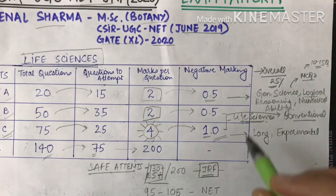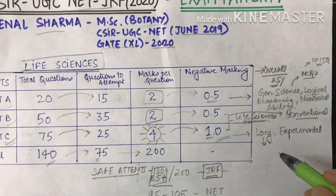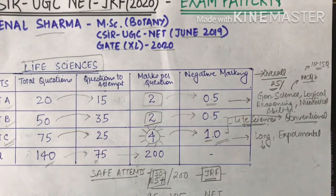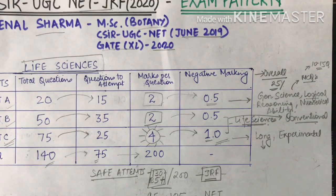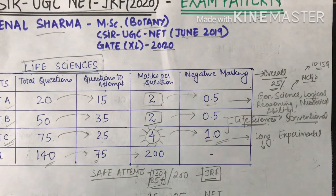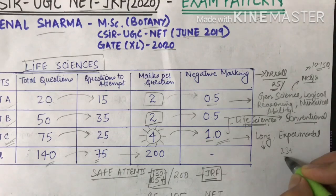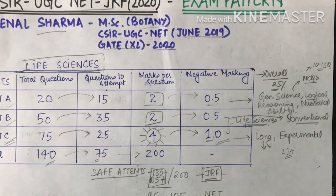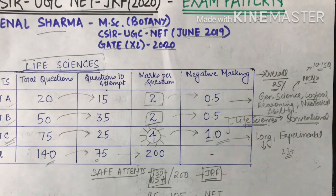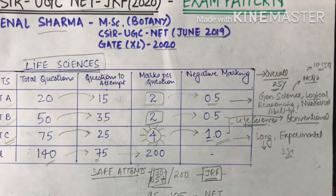Usually students are scared of this section because the questions are very long and they think they will not be able to do it. But personally, I found this section the most interesting and most easy. I usually attempted 22 to 23 questions well in this section, which is why my score was good.